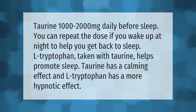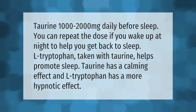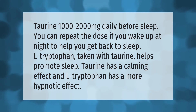Taurine, 1000 to 2000 milligrams daily before sleep — you can repeat the dose if you wake up at night to help get back to sleep. L-tryptophan taken with taurine helps promote sleep: taurine has a calming effect and l-tryptophan has a more hypnotic effect.